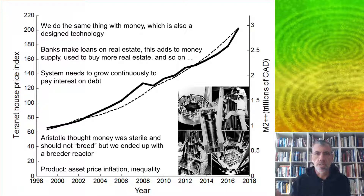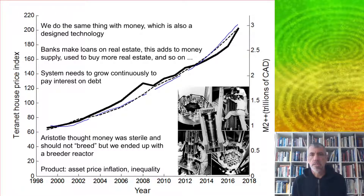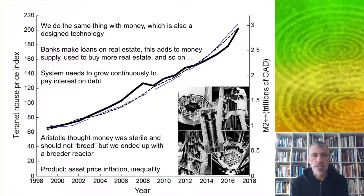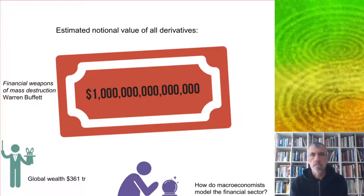We get the same kind of self-sustaining exponential growth in the economy: banks make loans on real estate, this adds to the money supply, it's used to buy more real estate, and so on. The growth in house prices in Canada matches quite closely the growth in the money supply — they both grow together. The system needs to grow continuously in order to pay the interest on the debt. It's ironic that Aristotle thought money was sterile and should not breed by handing out interest, but we ended up with what amounts to a financial breeder reactor.